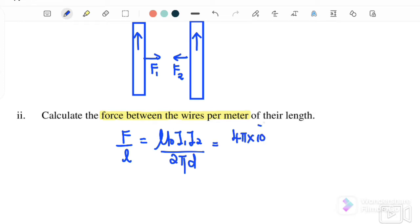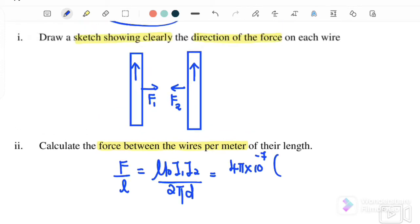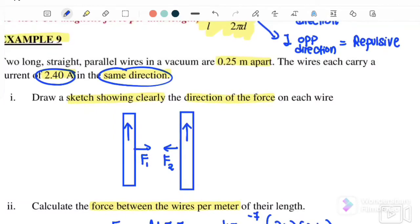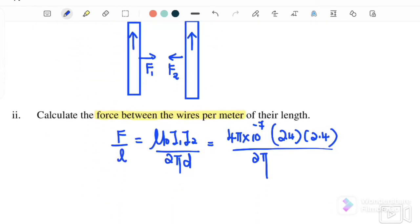Where is 4 pi times 10 to the negative 7, i1 here both of them is 2.4, so 2.4 times 2.4 over 2 pi d. D is the distance, so the distance here is given as 0.25, so we substitute in 0.25 meter.